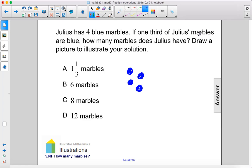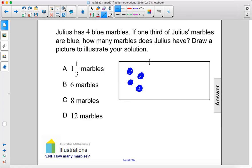So one-third of Julius's marbles are blue. So let's draw a box to show that these are all of the marbles, and we can split this up into three parts.